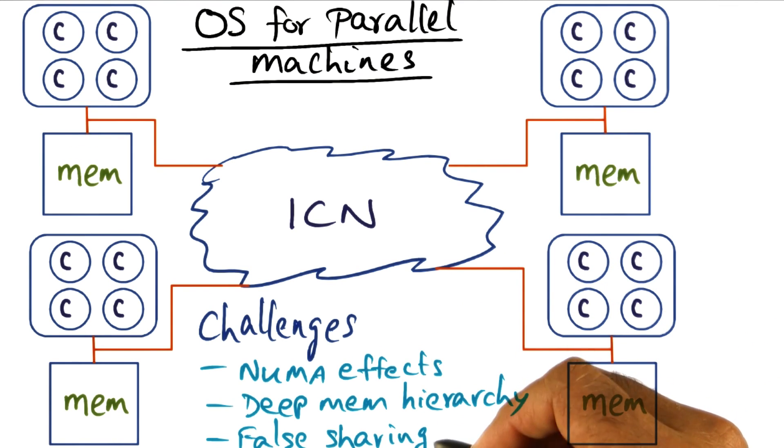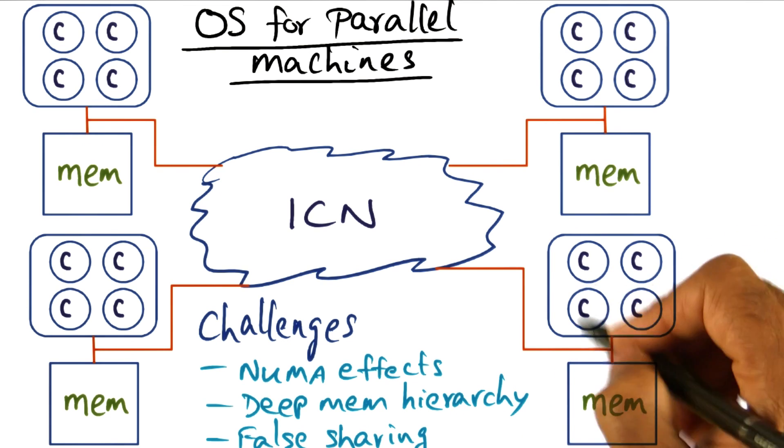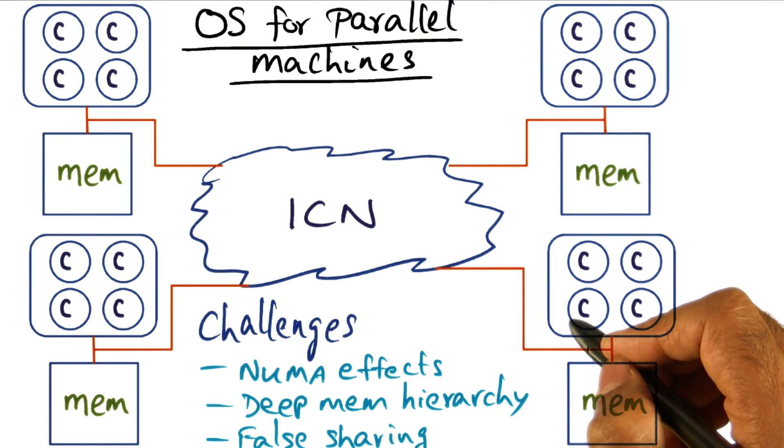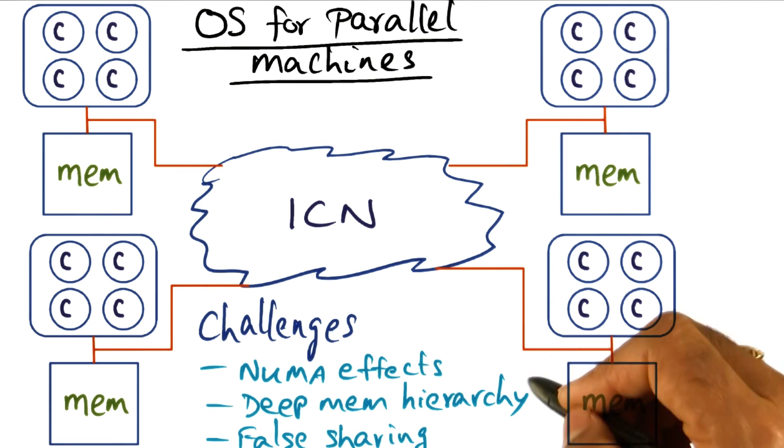So some of the things that the OS designer would have to do is work hard to avoid false sharing, work hard to reduce write sharing the same cache line. Because if you write share the same cache line, then it is going to result among different cores of the same processor, then it is going to result in that cache line migrating from one processor to another.